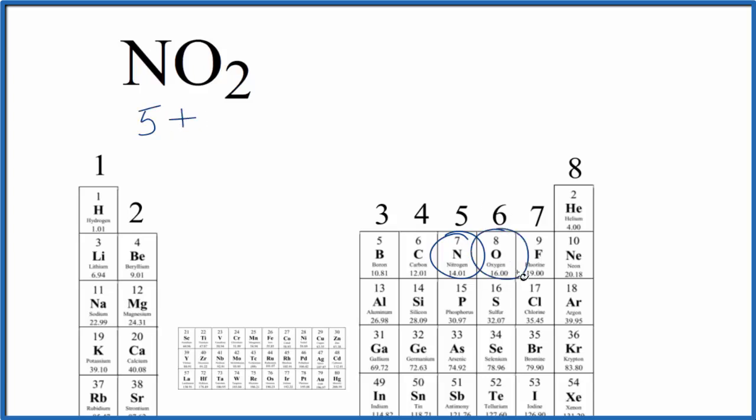Oxygen, group 16, sometimes called 6A, that has 6 valence electrons. We have 2 oxygen atoms. Total of 5 plus 12, that's 17. So we have an odd number of electrons for the NO2 Lewis structure.